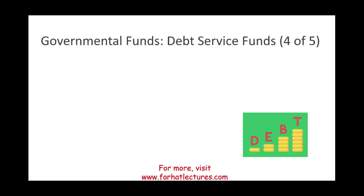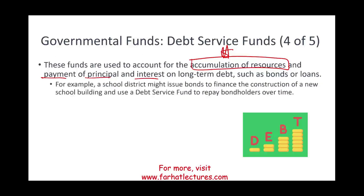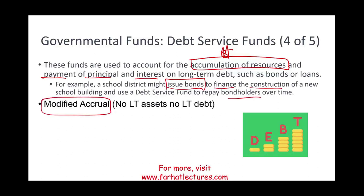The fourth type of governmental fund is the debt service fund — we can have many of those. These funds are used to account for the accumulation of resources for the payment of principal and interest on long-term debt such as bonds and loans. For example, a school district might issue a bond to finance construction of a new school building, then use the debt service fund to repay the bondholders over time, tracking the money that will pay back principal and interest.